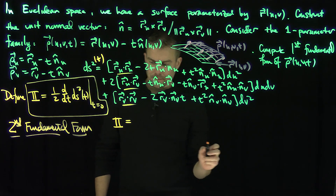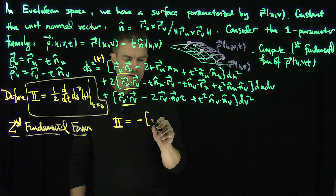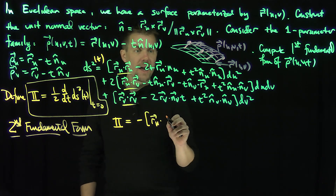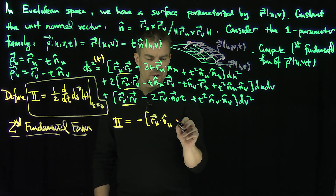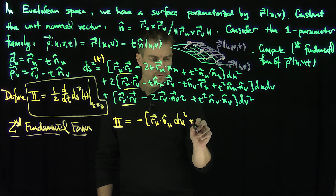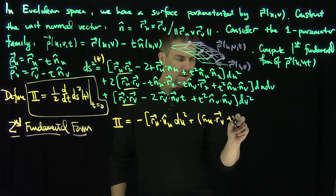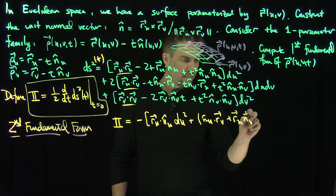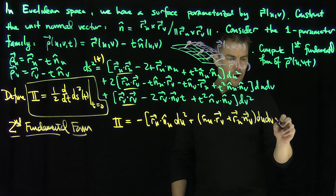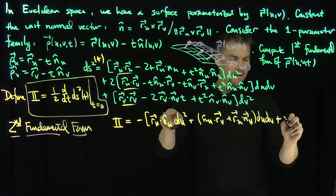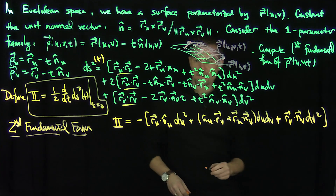So from this calculation, every term is going to have a negative. We get negative r_u dot n-hat_u for the du squared terms. For the du dv terms, we get n-hat_u dot r_v plus r_u dot n_v. And for dv squared, we get r_v dot n_v. That is the second fundamental form.